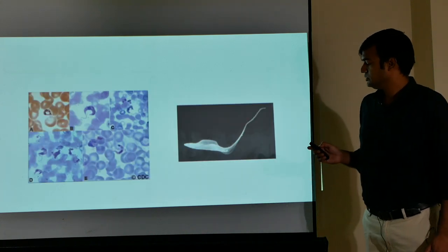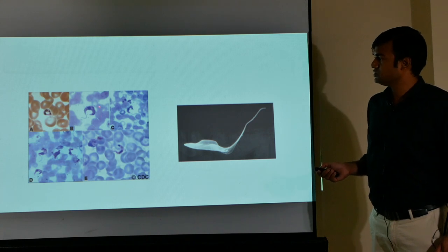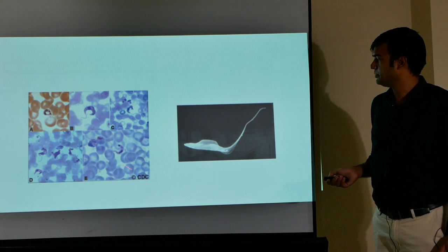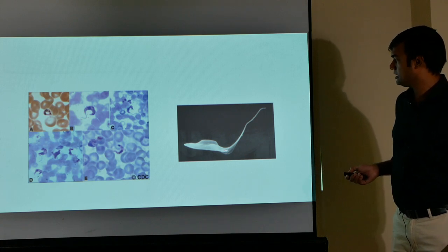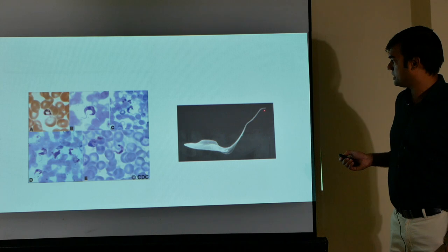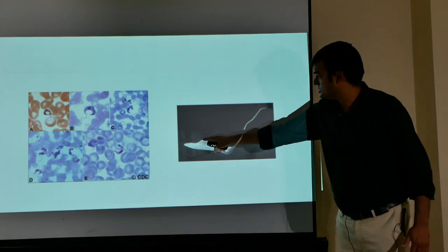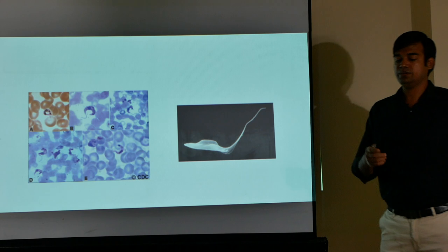In stained peripheral blood films, the trypomastigote appears spindle-shaped with a central nucleus and a flagellum coming out from the anterior end. In the electron micrograph, the last part is the flagellum and the visible membrane along the body is the undulating membrane.